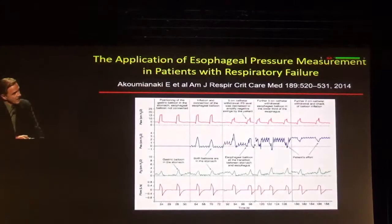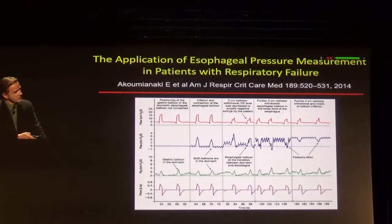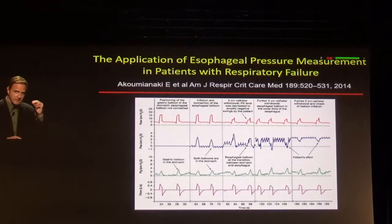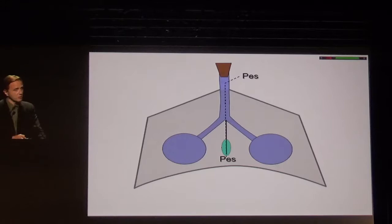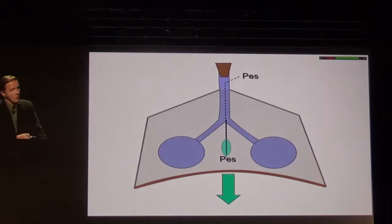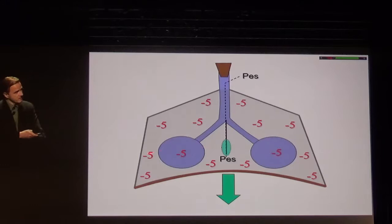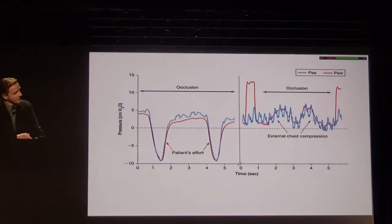There are many technical aspects when measuring the esophageal balloon. It's important to put the balloon in the right position and check if these swings are estimating the magnitude of effort in a good way. We typically use what we call the occlusion test: you close the airways, and with the patient spontaneously breathing, you occlude the airway, wait for patient effort, and then suppose that pressures are transmitted over the thoracic structures. You then compare the swings in airway pressure and esophageal pressure — in this case the swings are pretty much matching, which is a good indication.